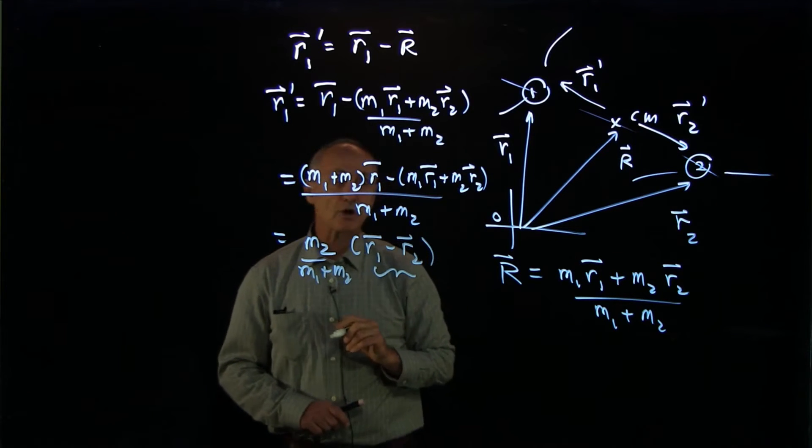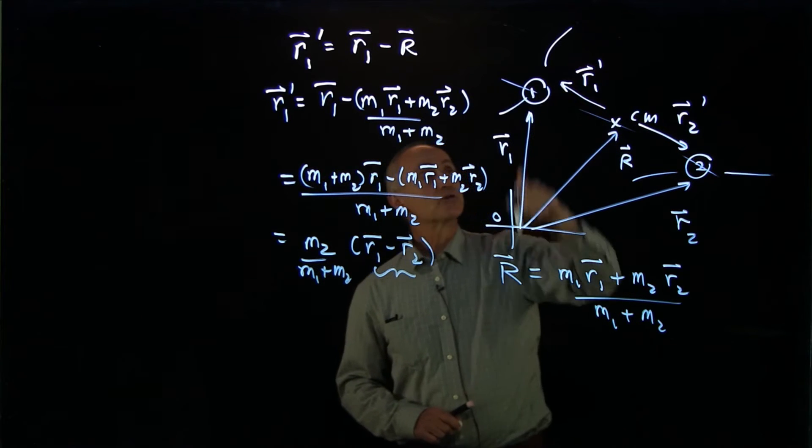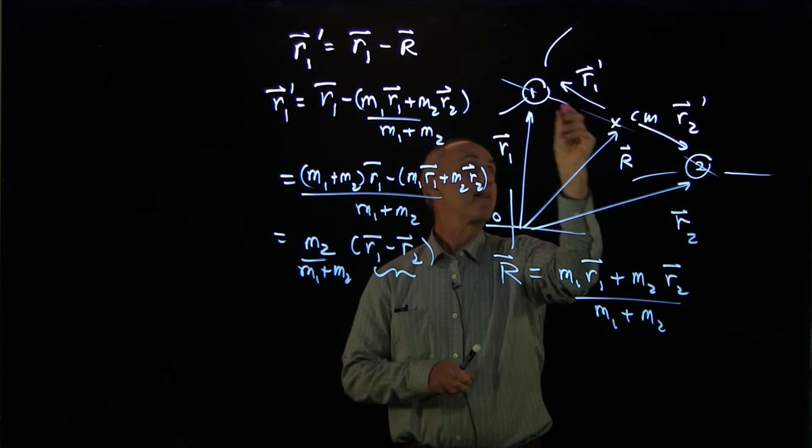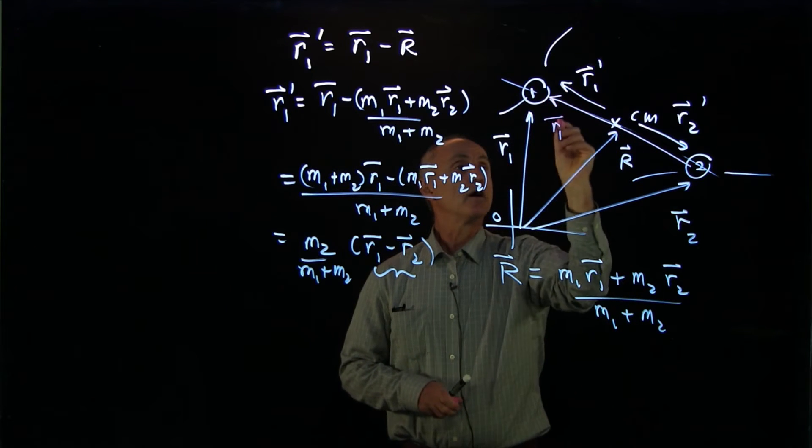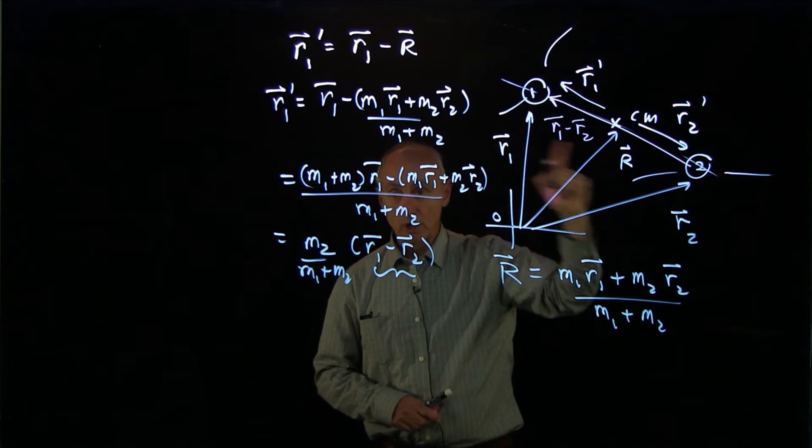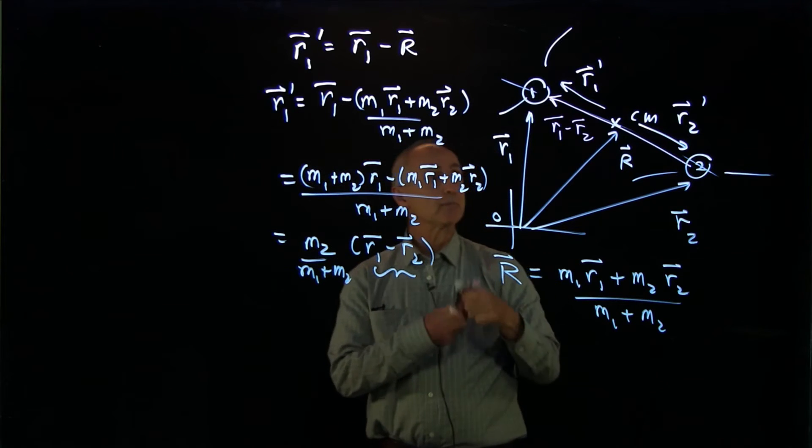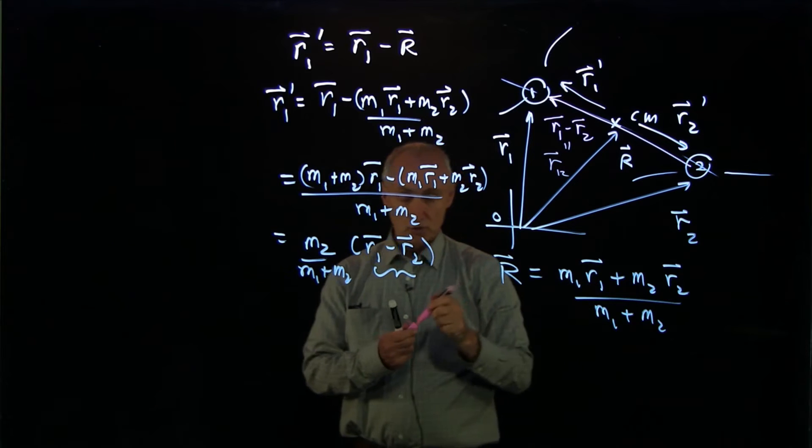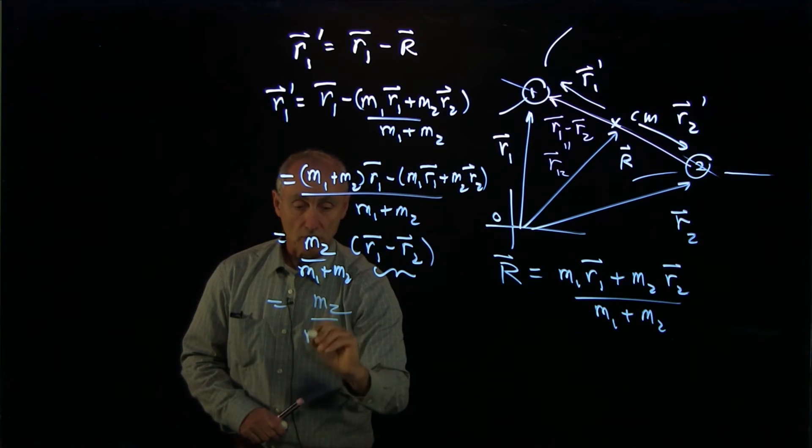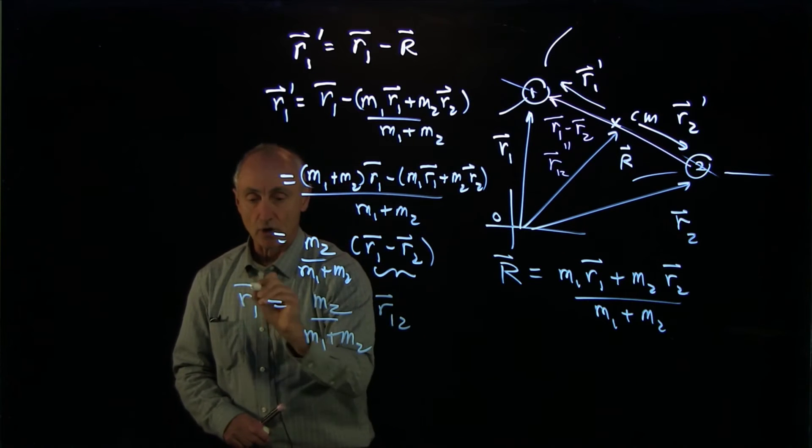Now, r1 minus r2 is a vector that goes from here's r1, here's r2. So the vector r1 minus r2 is the relative position of vector 1 with respect to 2. Let's give that a special name. We'll call that r12, the relative position vector. So we have m2 over m1 plus m2 r12 is r1 prime.